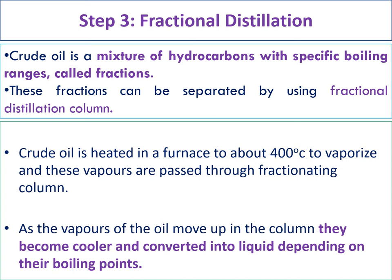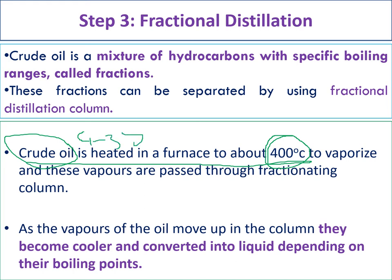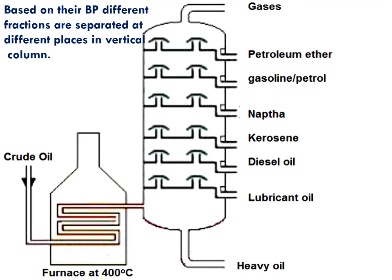First, the total crude oil is heated at 400 degrees centigrade in a furnace to evaporate all of it. All crude oil components from C1 to C35 are heated and become vapors. These vapors are then passed into a long vertical stainless steel chamber. Inside this chamber, gases containing different fractions are present.